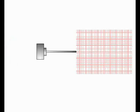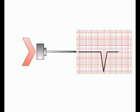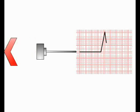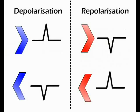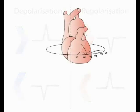In contrast, repolarizing current has the opposite polarity to depolarizing current. Therefore, repolarizing current moving towards a lead produces a negative deflection on the paper, while repolarizing current moving away from the lead produces a positive deflection. As the depolarization and repolarization waves spread over the normal heart in a well-defined and relatively constant pattern, these rules mean that if we know the position of an ECG lead relative to the heart, we can predict the form of readout it records.